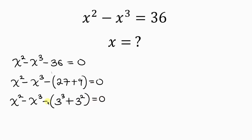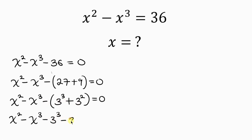Our next step is to open up the brackets, so we have x squared minus x cubed minus 3 cubed, and then minus times plus is minus 3 squared, equal to 0.